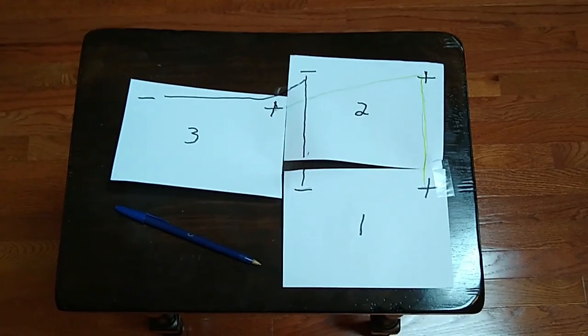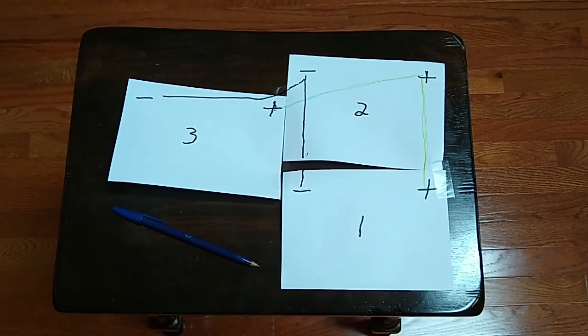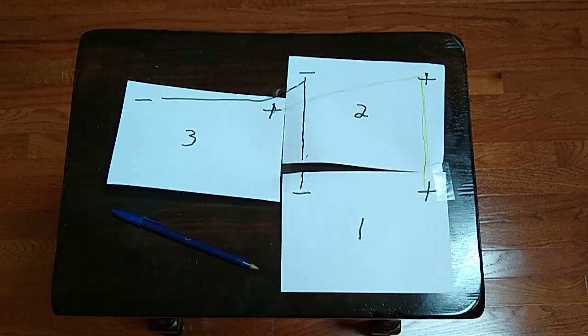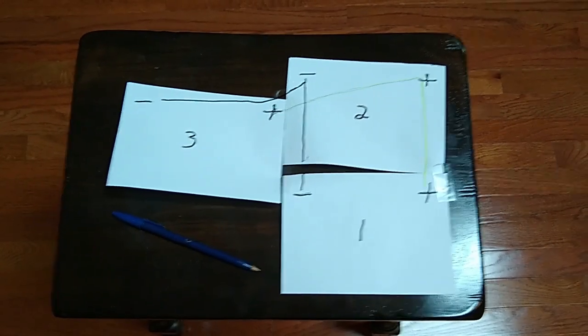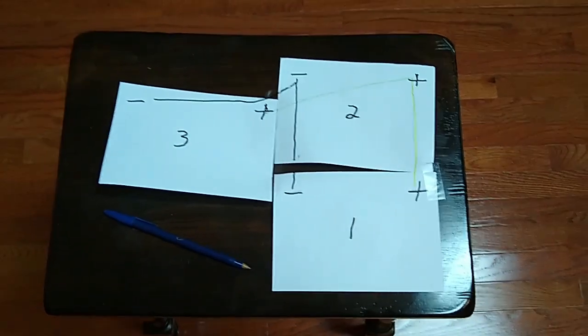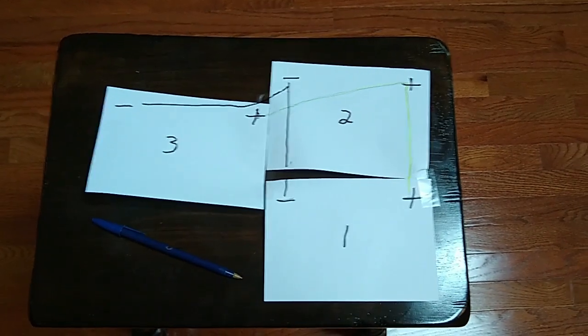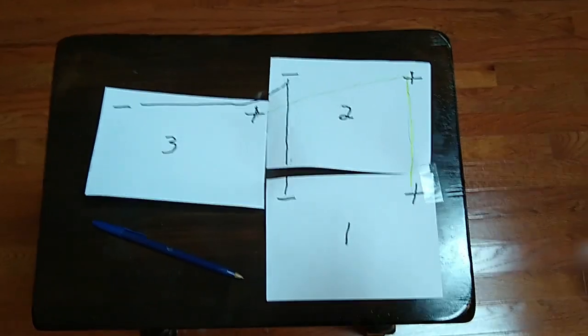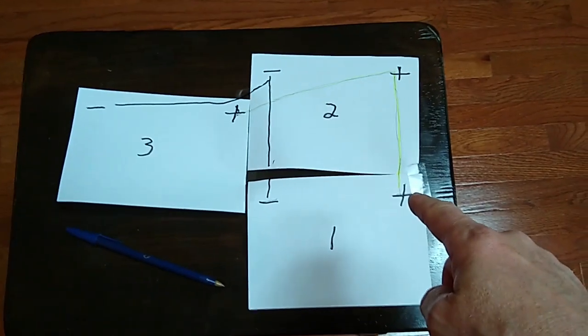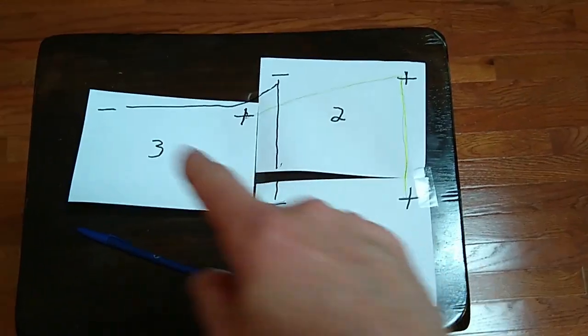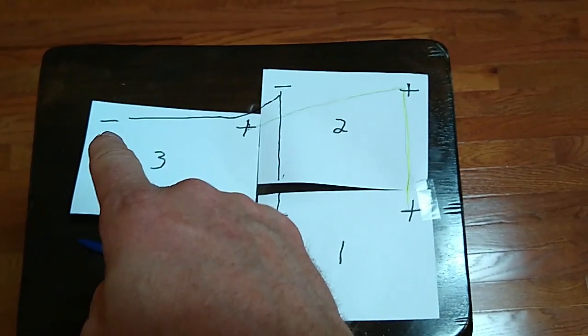So when you have your charger coming in from your solar panel you're gonna want to pretend that there's only one positive and one negative here. So let's pretend that this positive is the only one that exists and that this negative is the only one that exists.